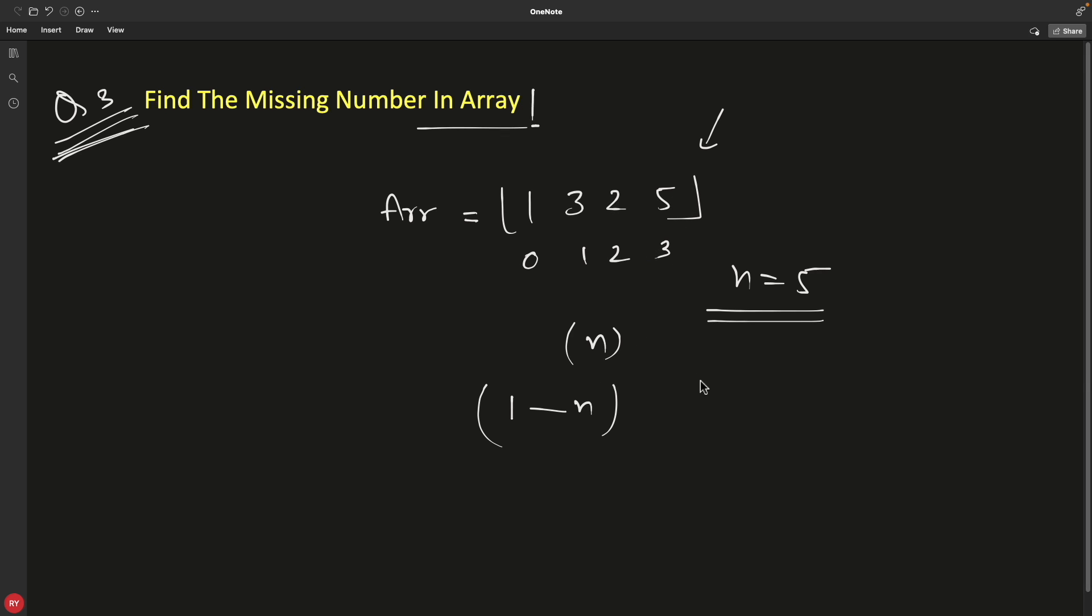If n is 100, meaning from 1 to 100 elements should be there, but any element might be missing. Maybe 2 is missing, maybe 5, maybe 50, maybe even 100 is missing. It can look like 1 to 99 are perfect numbers with nothing missing in between, but then 100 is missing.